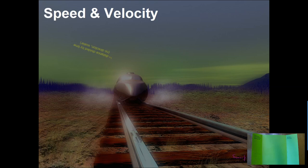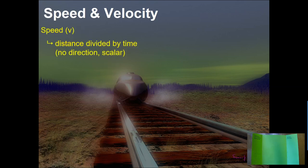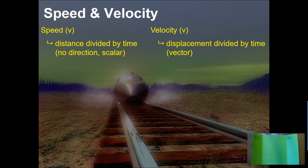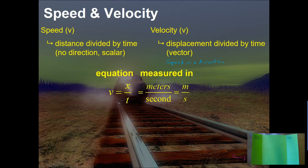Speed and velocity would be the next step. That's really when we talk about how fast we're going, which is our distance divided by our time. Our speed symbol is V. Speed is distance divided by time, there's no direction — it's a scalar. If we tack on a direction, then that's really going to be a velocity — it's displacement divided by time, or speed in a direction. The equation uses position, displacement, or distance over time. Distance and displacement are in meters, time in seconds, giving us the unit of meters per second. Both speed and velocity are measured in meters per second, but one will have a direction and one will not.